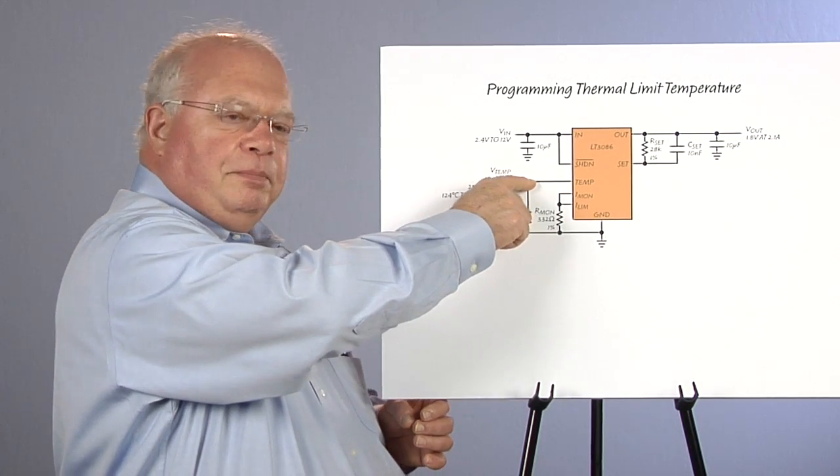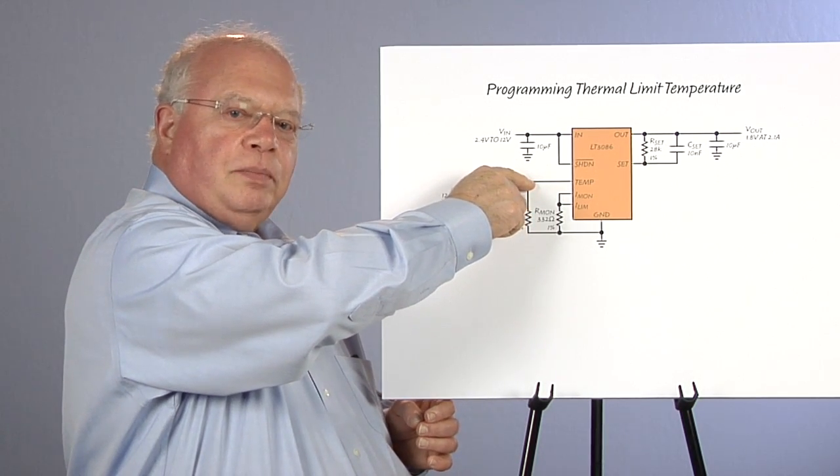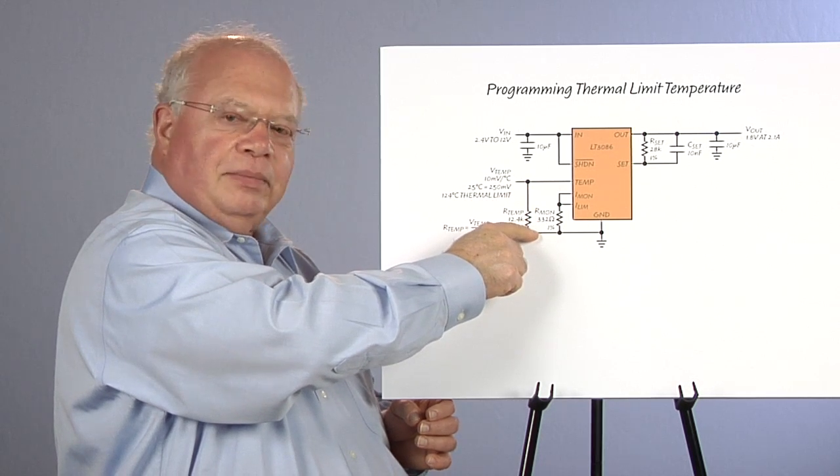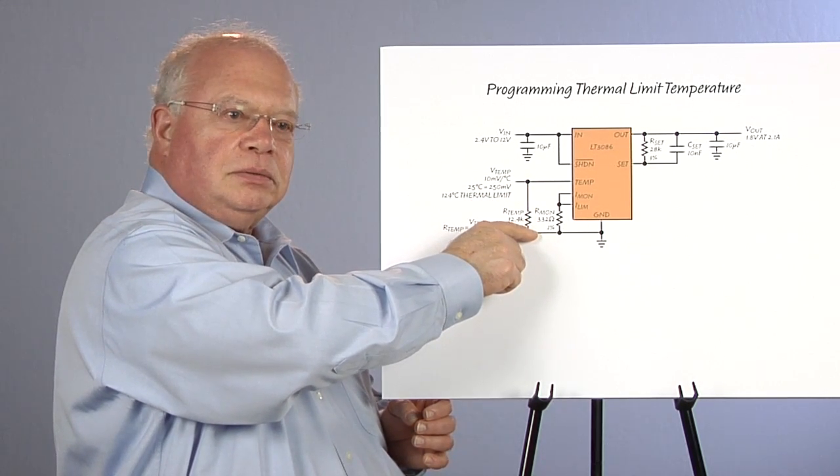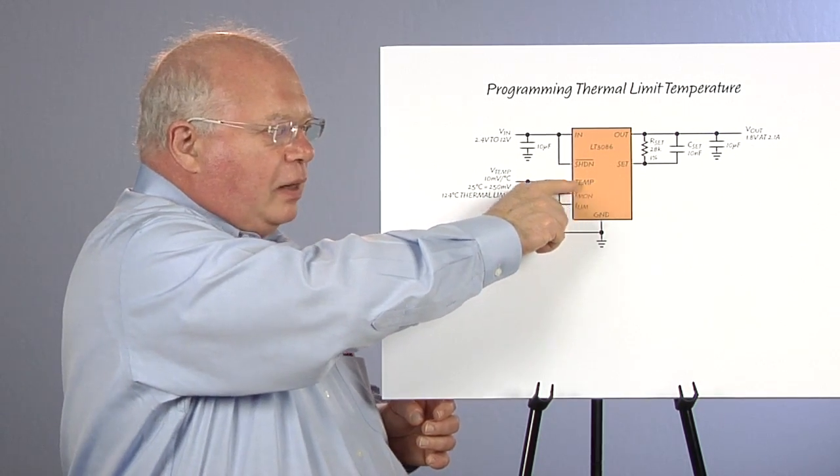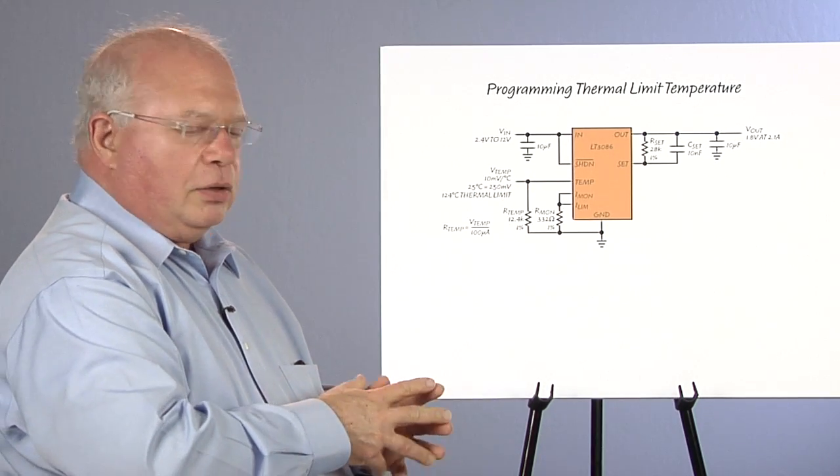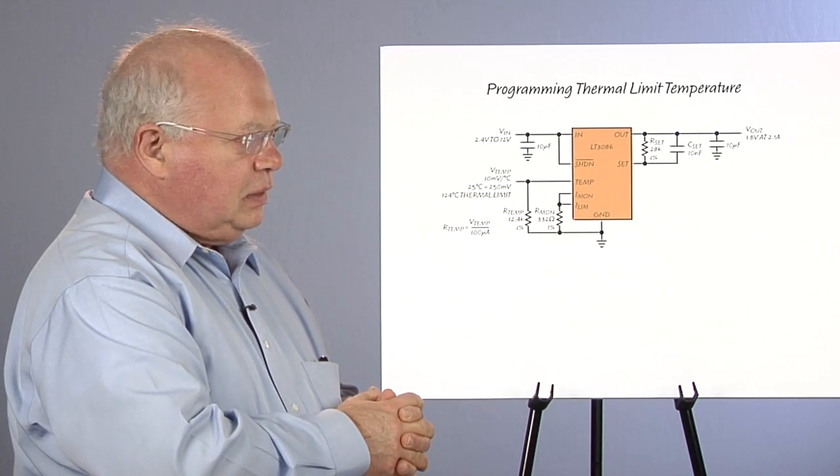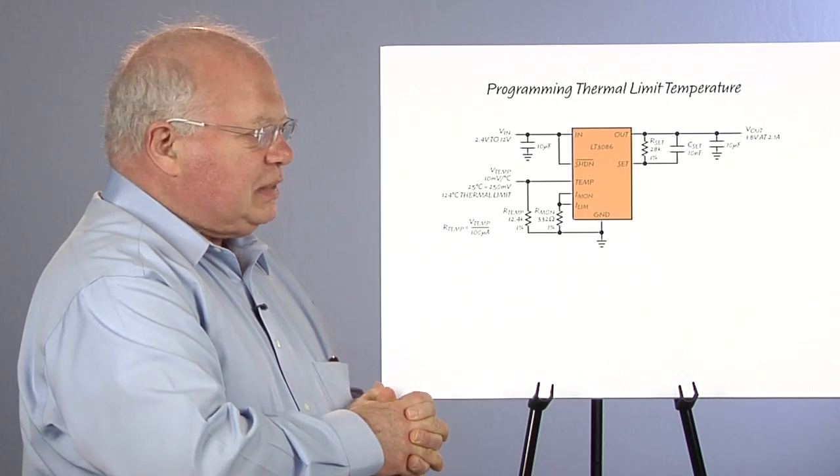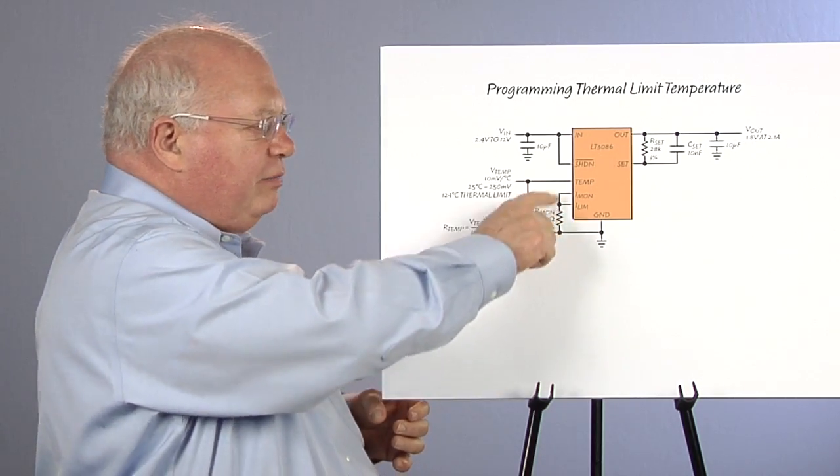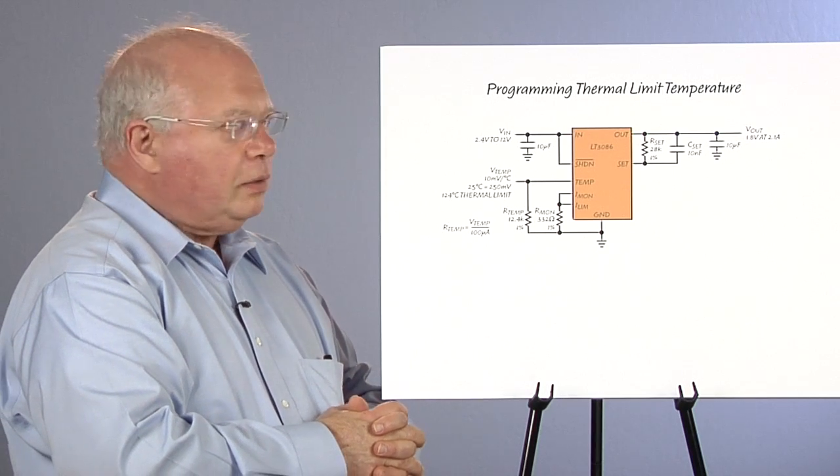When the output pin reaches 1.25 volts, I've got 100 microamps through this external resistor. And that 100 microamps triggers the internal circuitry to turn off the power device. And there's a few degrees of hysteresis in this. And we have our output current monitor as well.